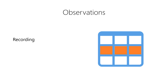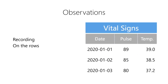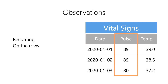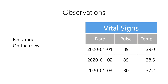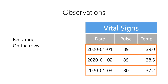In data science, we record observations on the rows of a table. The rows are the horizontal groups of data contained within the table. For example, imagine that we are recording the vital signs of a patient at a hospital. For each observation, we would record the date of the observation, the patient's heart rate, their temperature, and other vitals. Each of these observations would be recorded on a separate row.